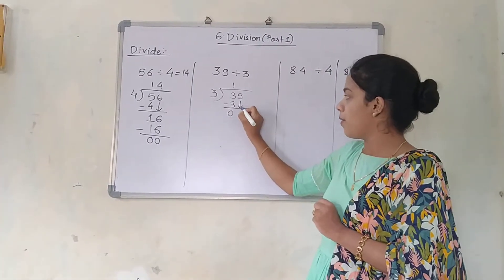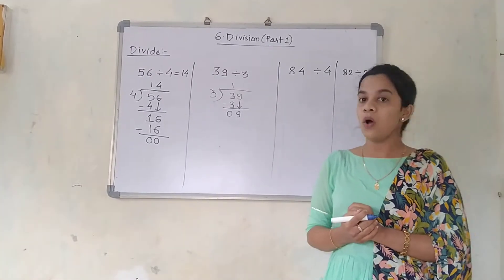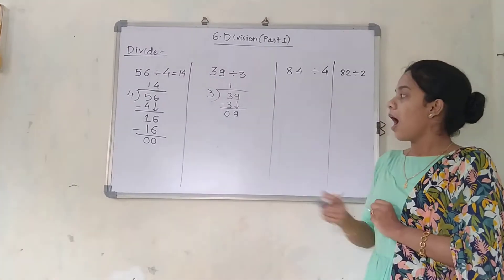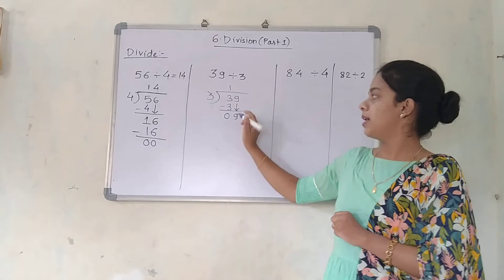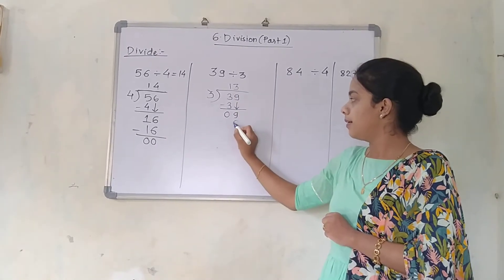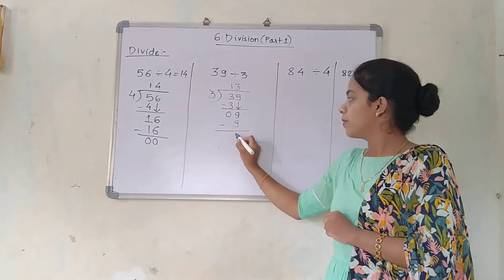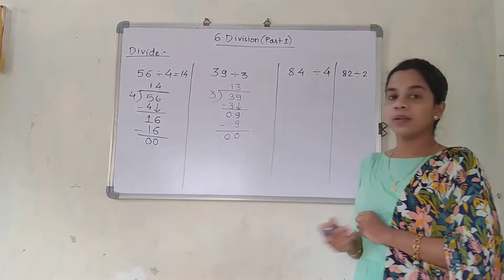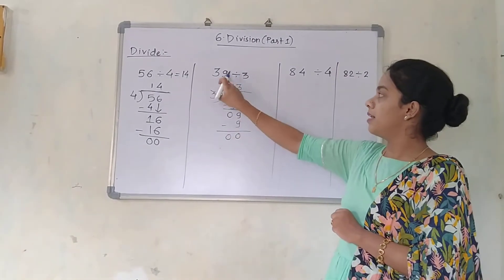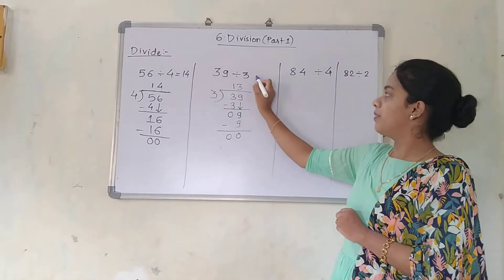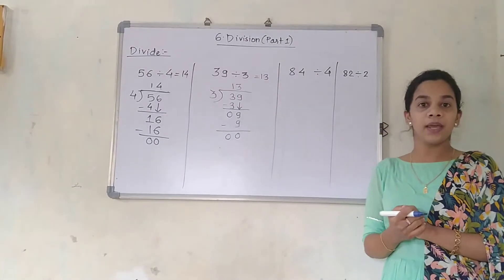I will draw one arrow and bring that 9 down. So 3 threes are 9. The answer of 39 divided by 3 is 13.